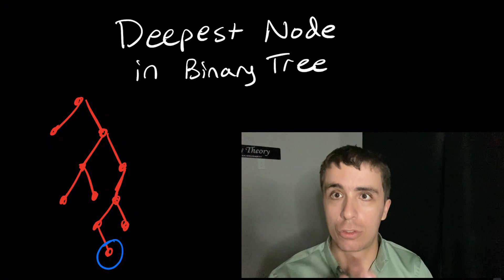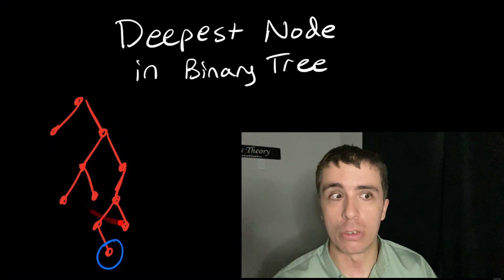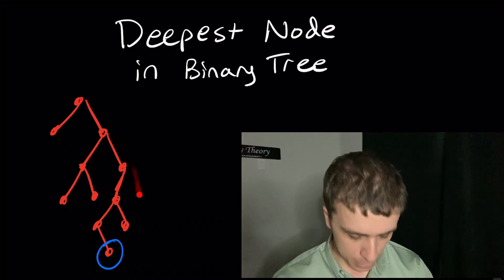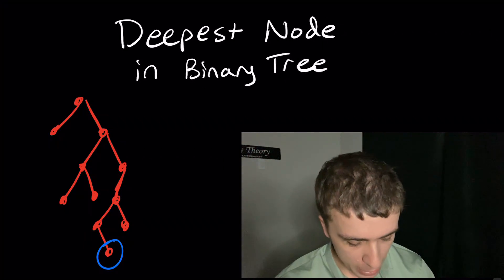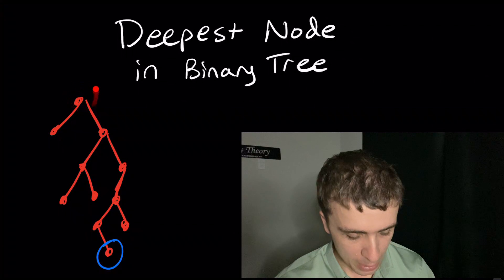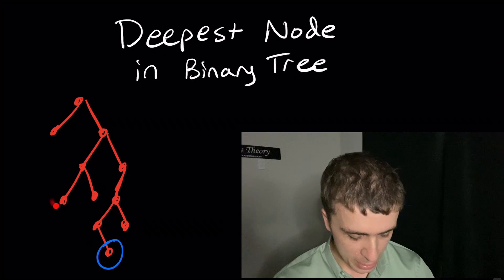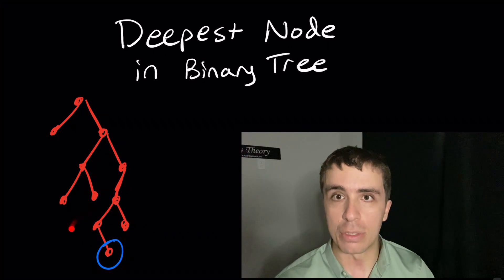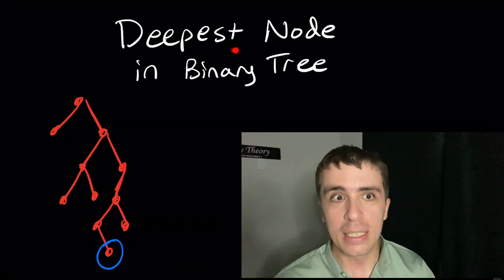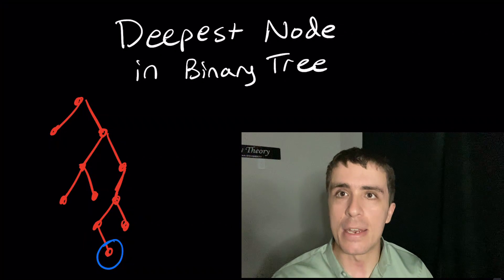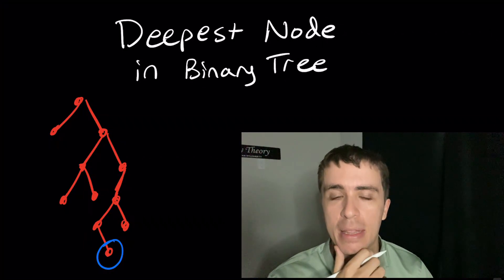I want to talk about trying to find the deepest node in a binary tree. We have a little binary tree right here, and the node circled in blue is the deepest node in this particular binary tree. The top is the root, then level one, level two, level three, level four, and then this one is the only one at level five. So it may not be the unique deepest node, but we want to find a node that has the deepest distance from the root in the tree.